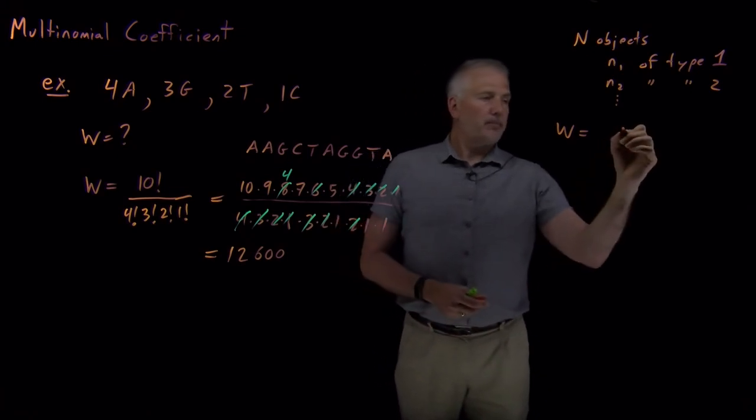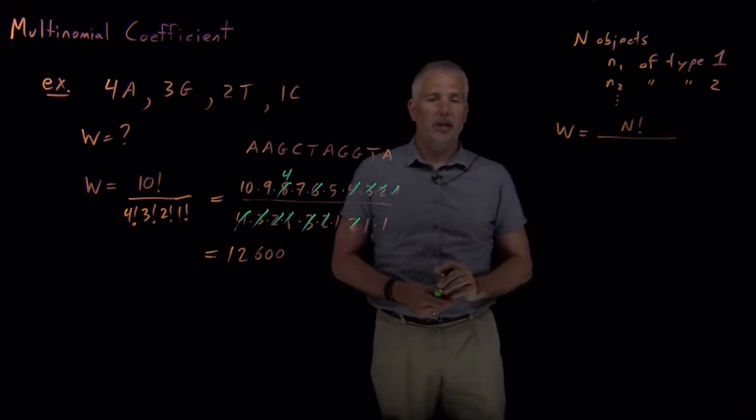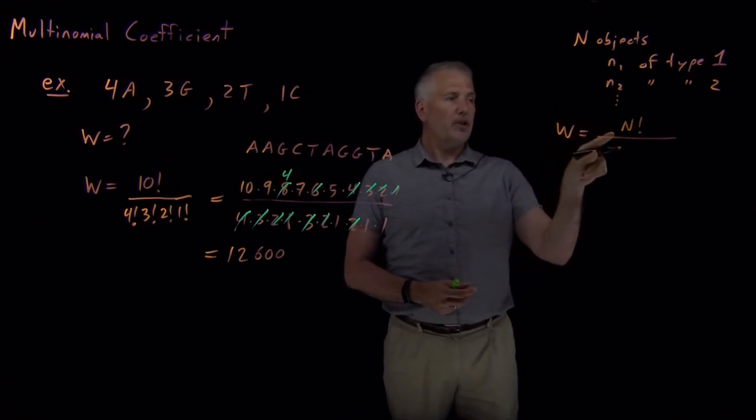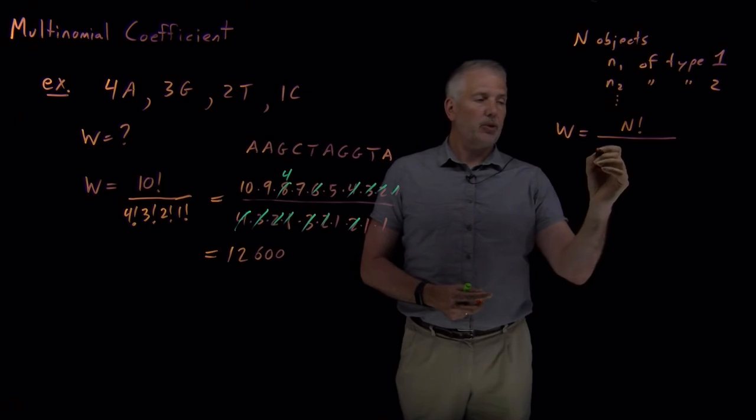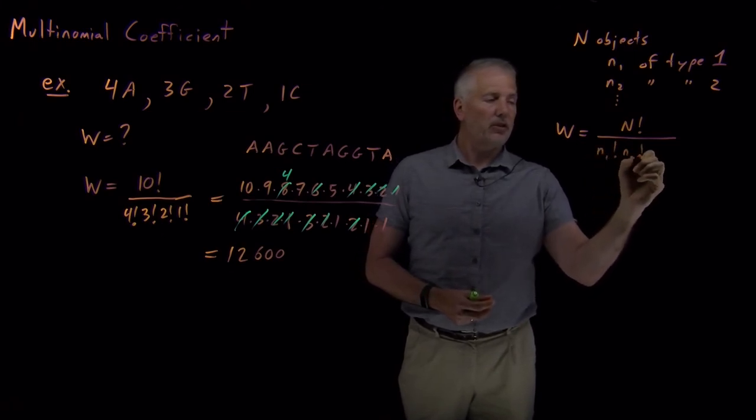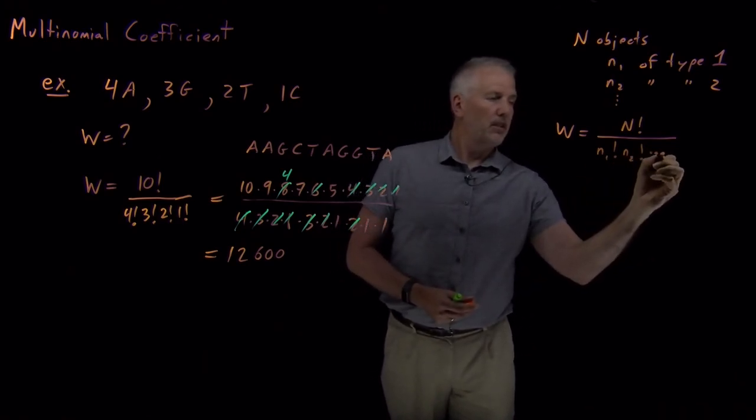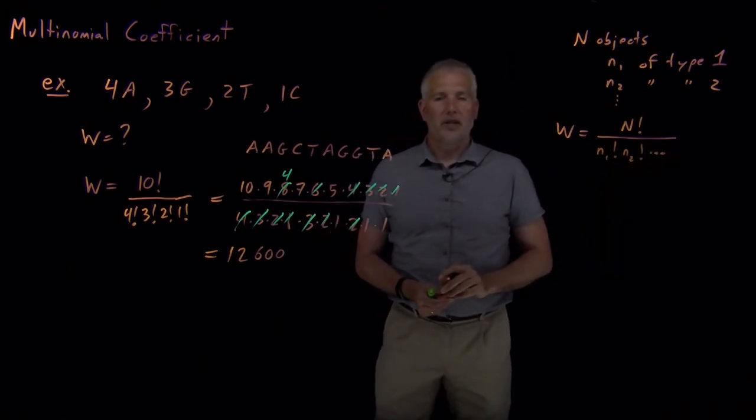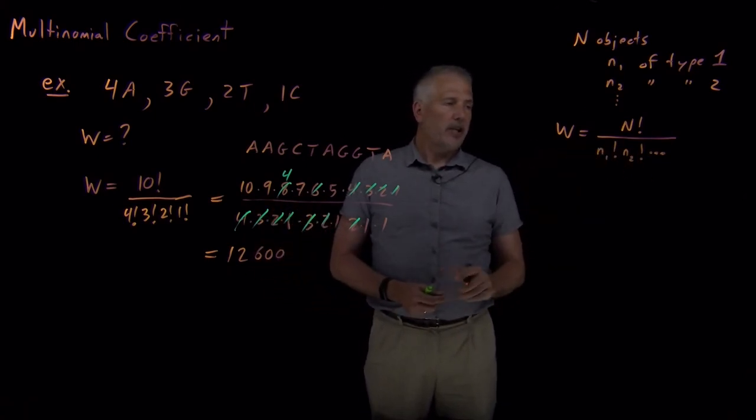This same process is going to work no matter how many different types of objects we have or how many of each type we have. So it would be n factorial if they were distinguishable, which they're not. So I have to divide by n1 factorial and n2 factorial and so on to correct for the fact that they're indistinguishable. That's exactly what we did in this example, and it would work in the general case.